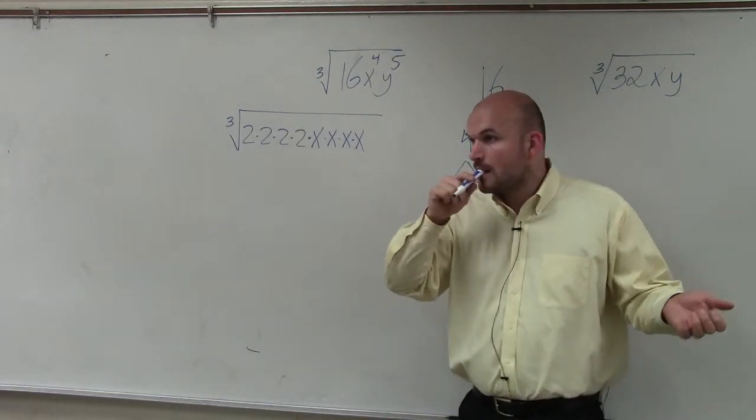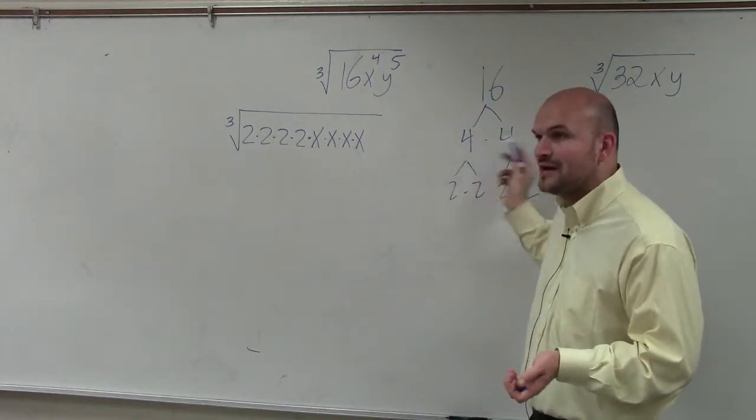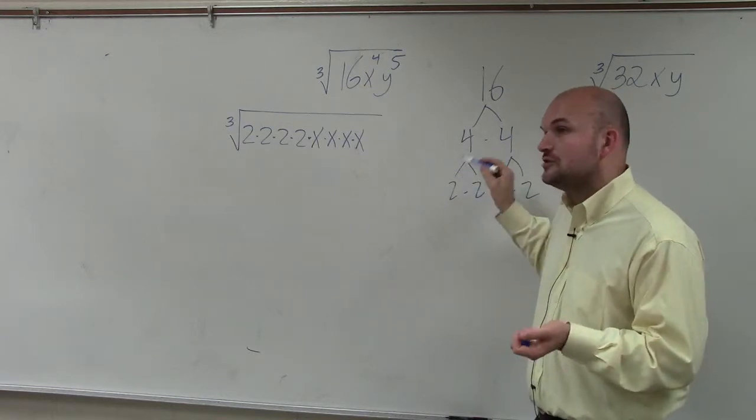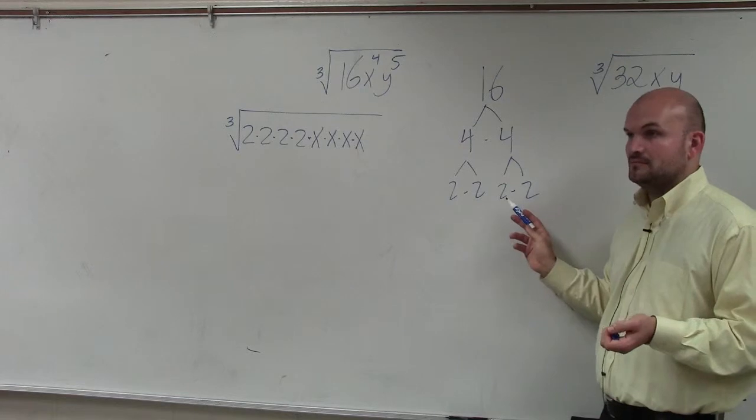Question? Can you do like 4 times 4? Yeah, you can, but 4 is not prime factors. You want to write it as prime numbers. So 4 and 4 are composite numbers. So you have to break them down further so they're all prime. Make sense?